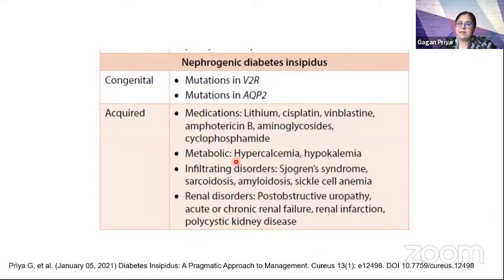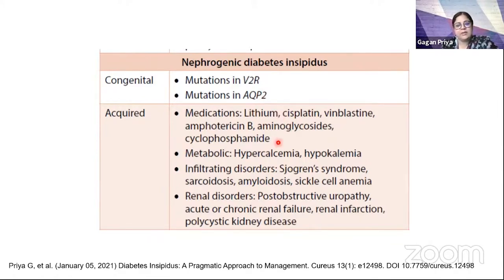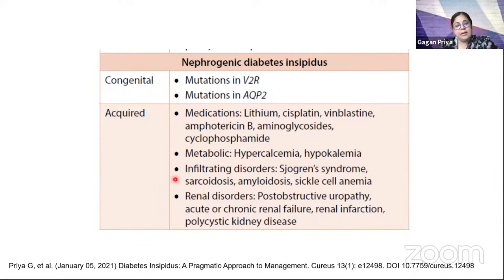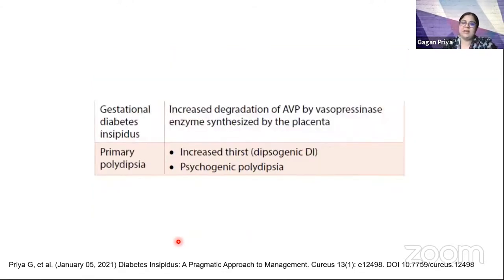Nephrogenic diabetes insipidus — congenital forms are less common and usually occur in the first 5-6 years of life with a florid presentation. Among acquired causes, the commonest is lithium-induced nephrogenic DI, but other drugs are also implicated. Two common metabolic causes are hypercalcemia and hypokalemia, which impact the effect of AVP on aquaporin-2 channels. Post-obstructive uropathy, acute or chronic kidney failure, renal infarction, and autosomal polycystic kidney disease can also present as nephrogenic DI.